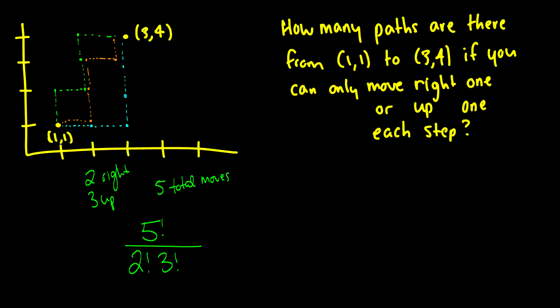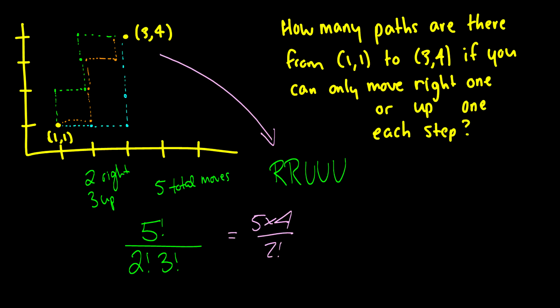We have 5 factorial ways of ordering these moves, but the 2 rights are indistinguishable and the 3 ups are indistinguishable. So we have 5 factorial over 2 factorial times 3 factorial — does this look like the databases question? This is the same as counting permutations of the string 'RRUUU'. Solving it gives 5 times 4 over 2 factorial, which equals 10. So there are only 10 different paths.